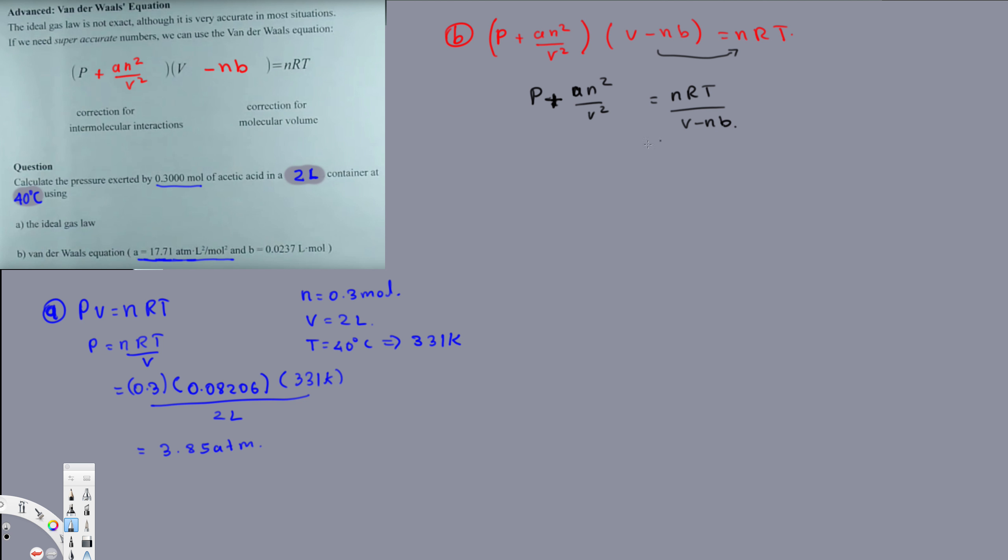I can bring this one to the other side and that's going to be subtracting. P is equal to nRT divided by V minus nB minus a n squared over V squared.